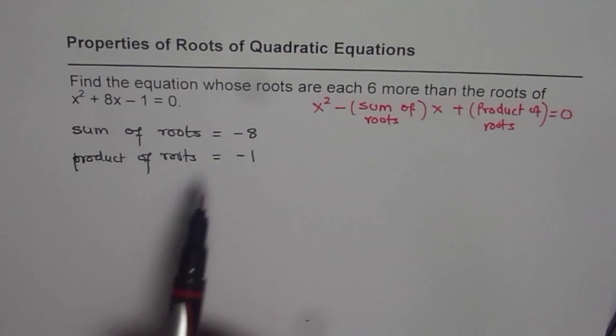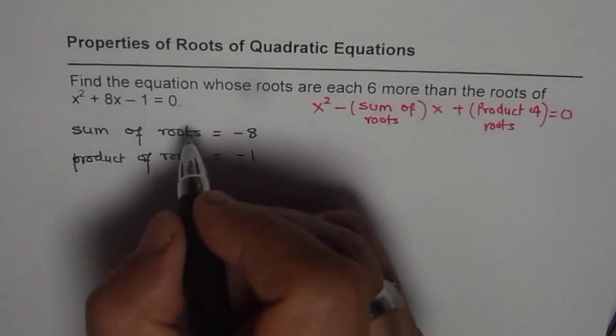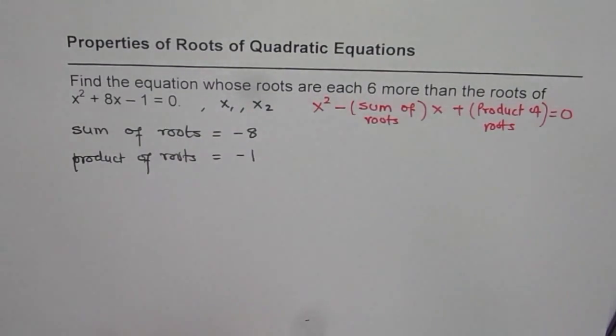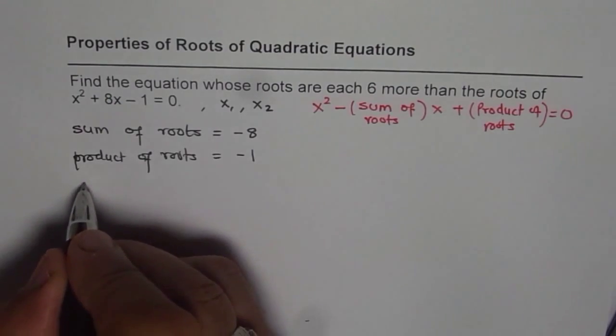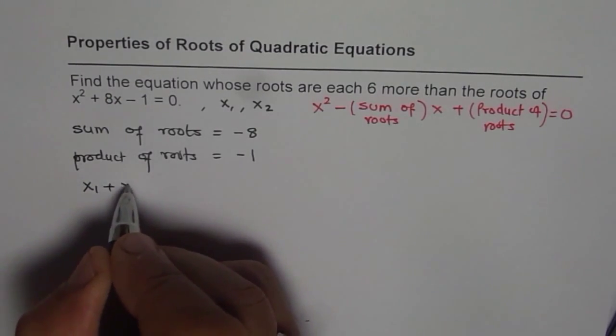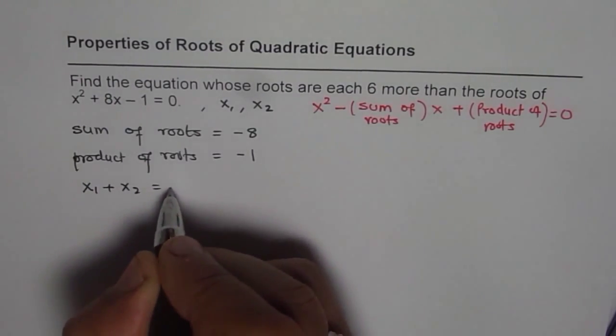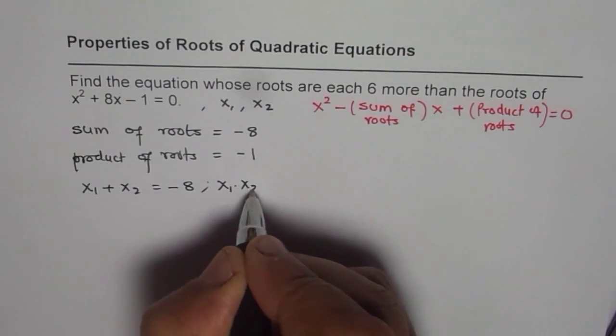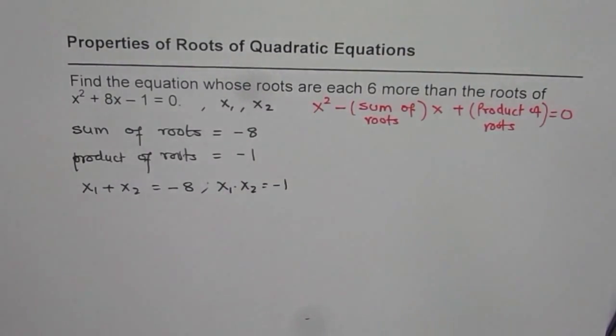So comparing, you get sum and product. Now let us assume that the roots are x₁ and x₂ for us. That means what we know from here is that x₁ + x₂, the sum of roots is -8, and x₁ × x₂ equals -1.